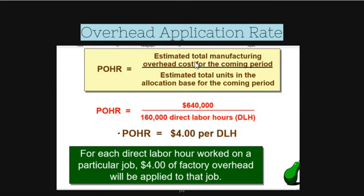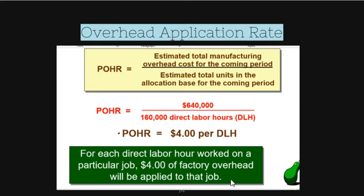For the overhead application rate example: the estimated total manufacturing cost is $640,000 and the estimated total units in the allocation base is 160,000 direct labor hours. Dividing these two gives a POHR of $4.00 per direct labor hour. So for each direct labor hour worked on a particular job, $4.00 of factory overhead will be applied to that job.